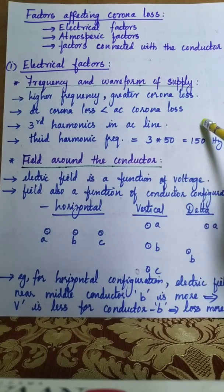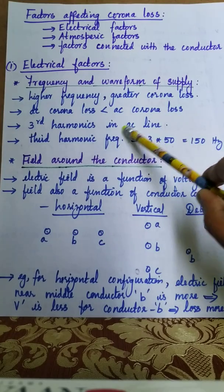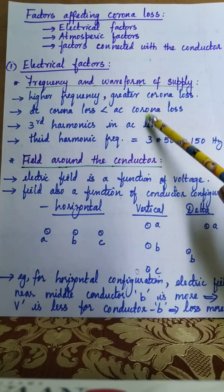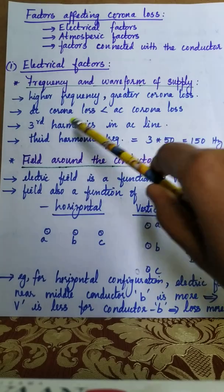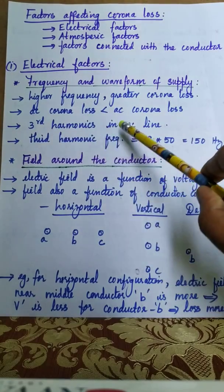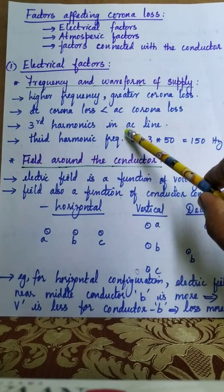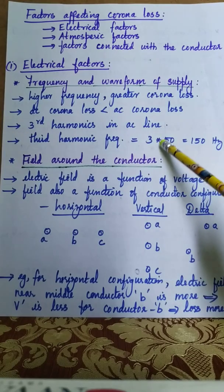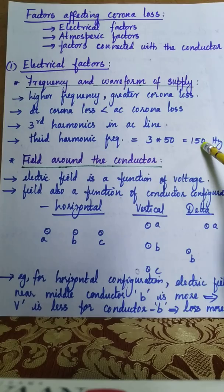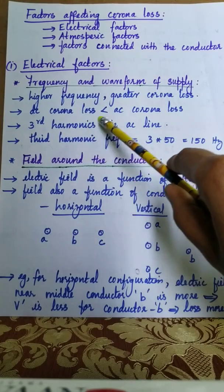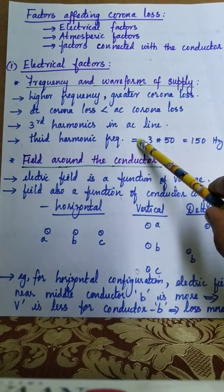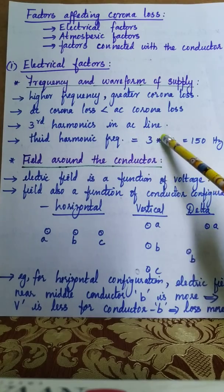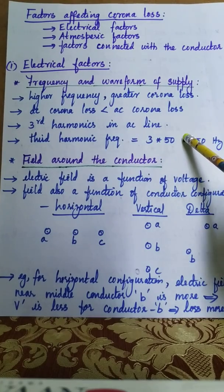Regarding the nature of the waveform: in an AC line, apart from the fundamental frequency of 50 Hz, third harmonic waveforms also exist. The frequency of the third harmonic component is 3 × 50 = 150 Hz. Due to the presence of third harmonics in the AC line, corona power loss will further increase because power loss is directly proportional to frequency.